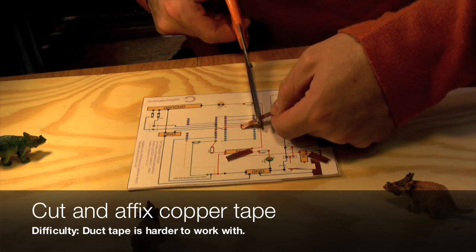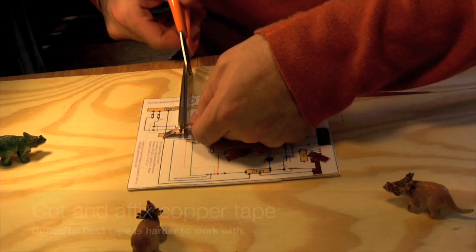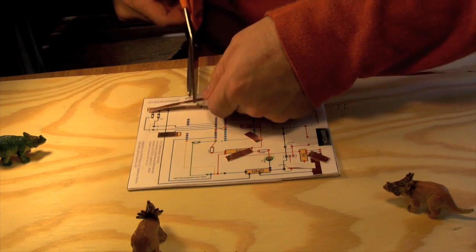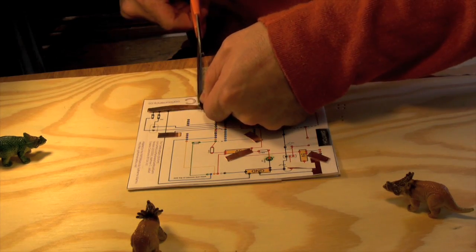Next, cut your copper tape to length. Roughly match the length of what you see on the board. If it's a little longer, that's okay. Extreme precision is not required here.